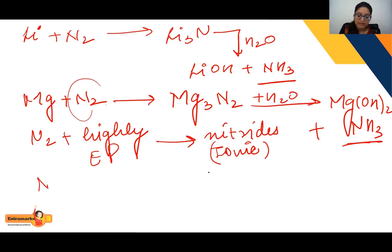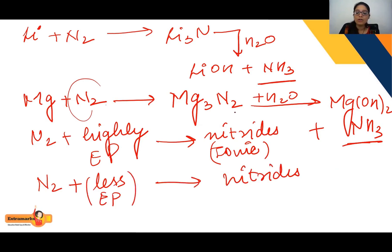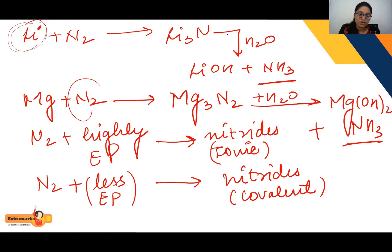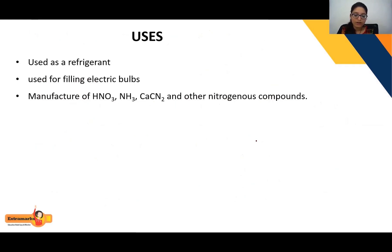When N₂ reacts with a low electropositive element, you again get a nitride, but that nitride is covalent in nature. So the nature of the nitride — ionic or covalent — depends on the electropositive character of the element reacting with nitrogen.